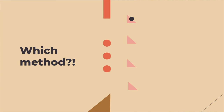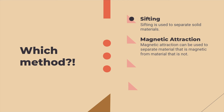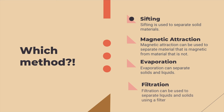Let's do a little review. The first method is sifting, which is used to separate solid materials. Magnetic attraction can be used to separate material that is magnetic from material that is not. Evaporation can separate solids and liquids like water and salt. And filtration can be used to separate liquids from solids using a filter.